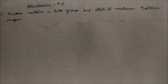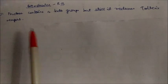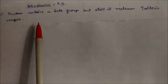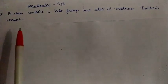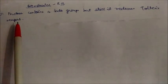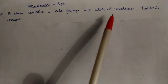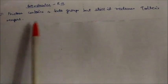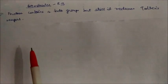Welcome friends. Today in this session we will see some reasoning questions based on biomolecules. Under this chapter, let us see some of the important questions which are usually asked in entrance examinations. Fructose contains a keto group but still it reduces Tollens' reagent — what is the answer?